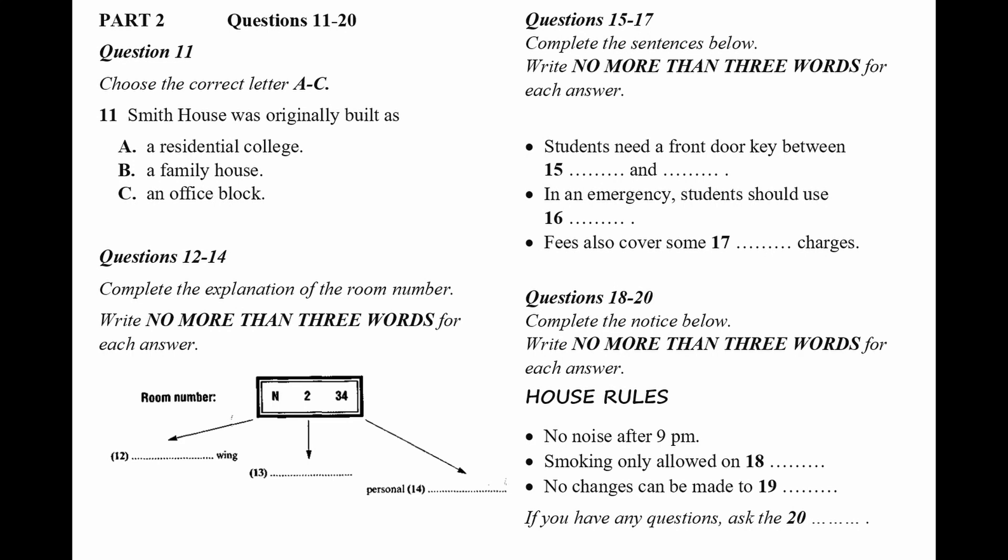So it's quite simple to find any room by going to the right wing, then floor, and then room number. Before you hear the rest of the talk, you have some time to look at questions 15 to 20. Now listen carefully, and answer questions 15 to 20.